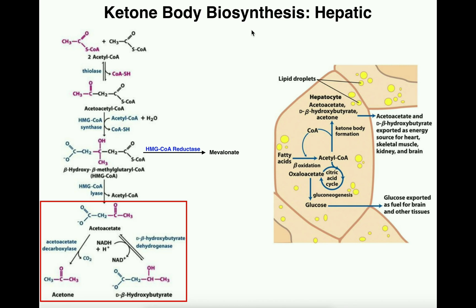The liver can metabolize fatty acids, and through the process of beta-oxidation the liver can generate molecules of acetyl CoA. Hopefully you know that through beta-oxidation, other than NADH and FADH2, acetyl CoA is the major product. And from those acetyl CoAs we can, through the liver, manufacture three ketone bodies — and that's what we're going to look at the biosynthesis of in this video.